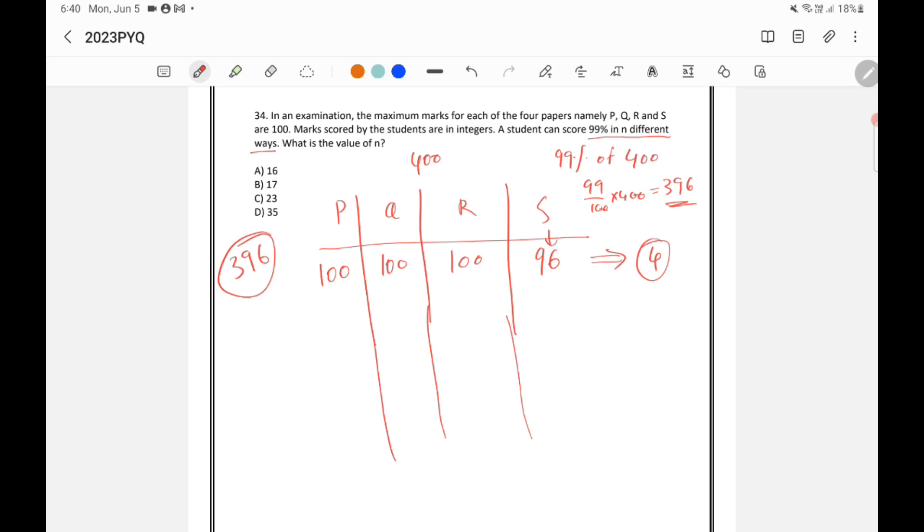Because here, S is 96. Similarly, R could be 96 and all other can be 100. Q could be 96, all other can be 100. P could be 96 and all other can be 100. So there are total 4 possibilities.